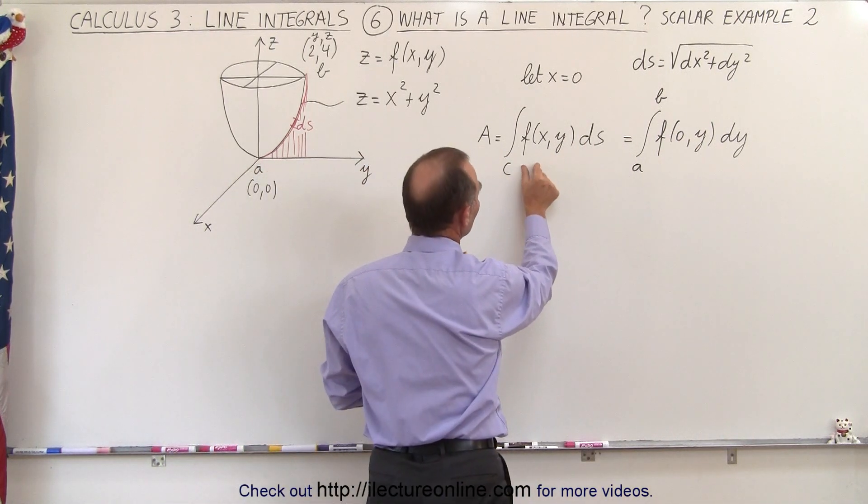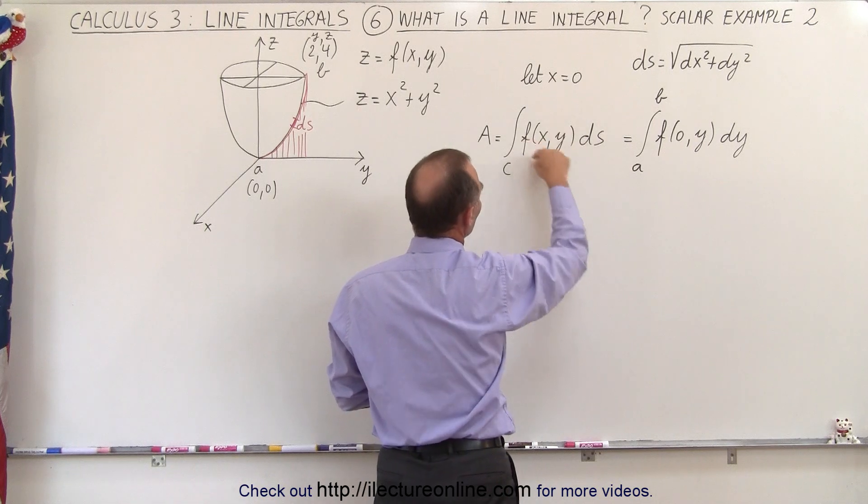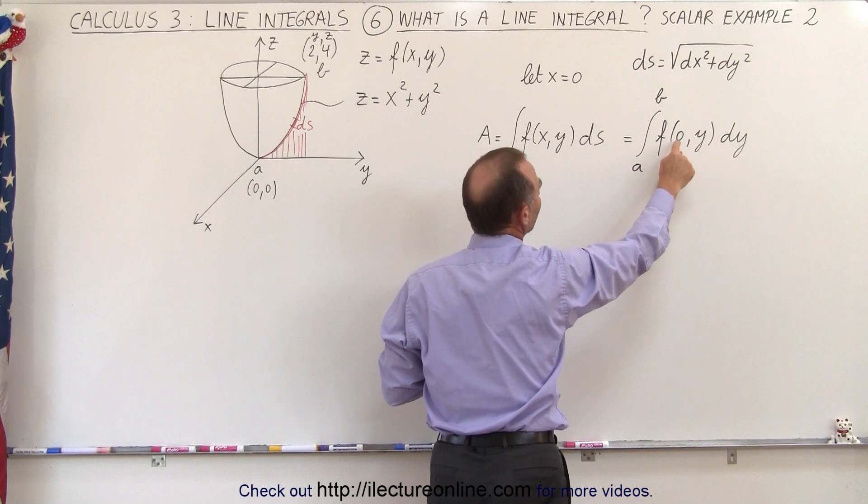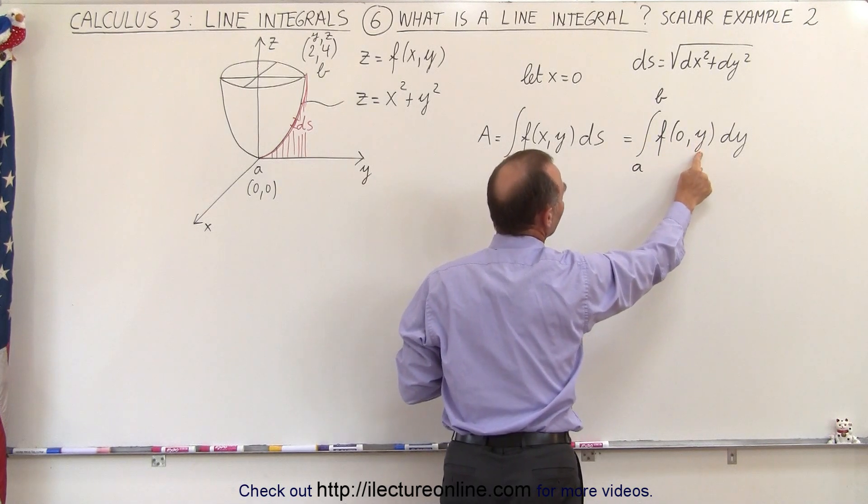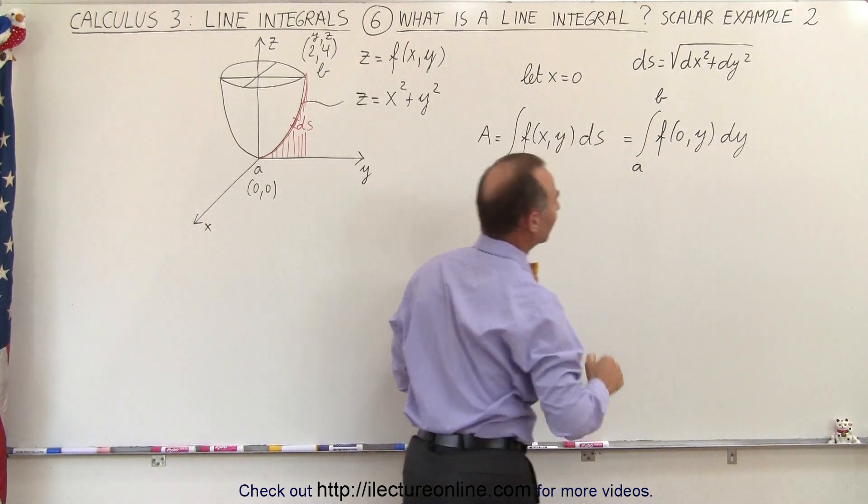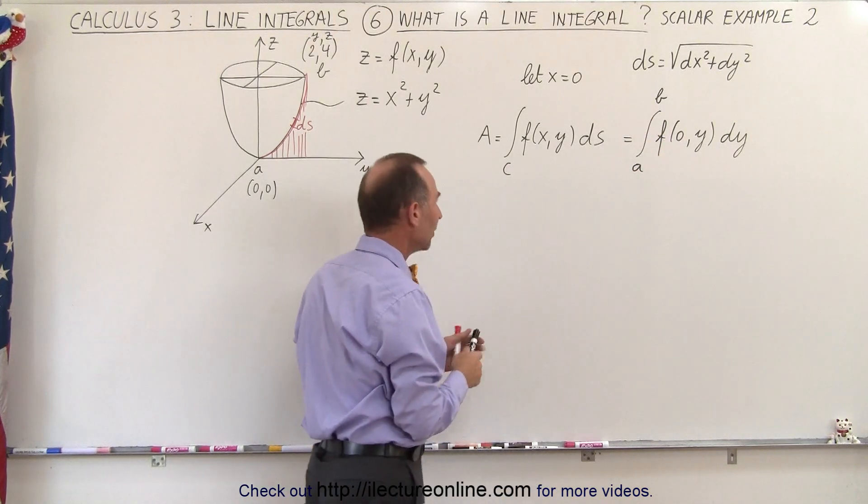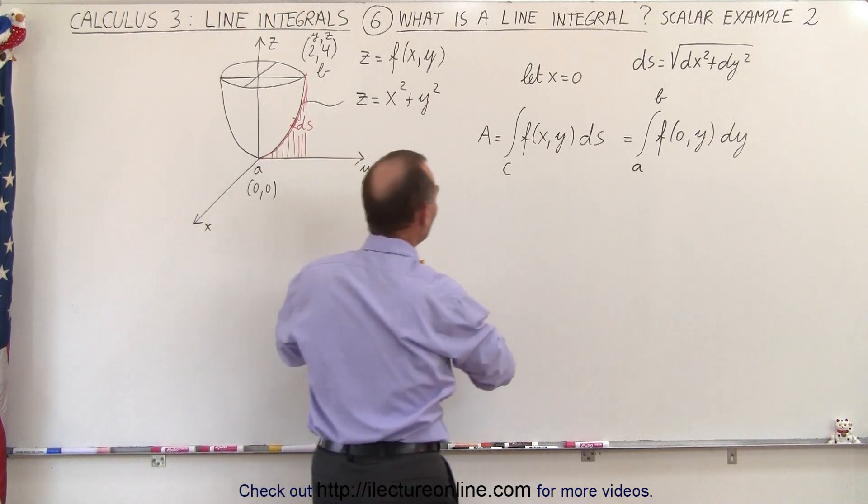This means that our integral can now be written instead of the function of x and y, which is the z value of the surface times ds, can now be written as the function with x equals 0 only depending upon y, and ds is replaced by dy, and the limits from a to b will now be in terms of the y limits.